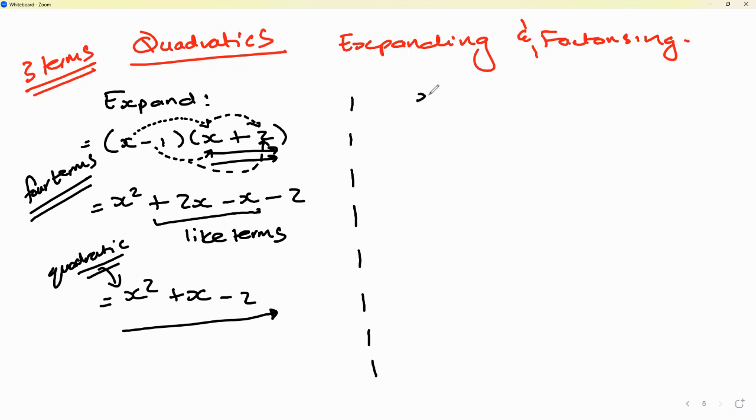Taking that same answer now, let's just say I'm asked to factorize x squared plus x minus 2. How would I go back to that bracket? That's the question. The first thing I do is I start with my constant. In this case, 2.